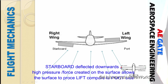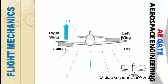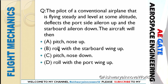When the starboard aileron deflects downwards, lift is generated on the starboard side. On the port side, drag is produced, so lift acts downward on that side. As a result, the starboard wing rises and the rolling takes place in a clockwise direction. So the right option is option B — roll with the starboard wing up.